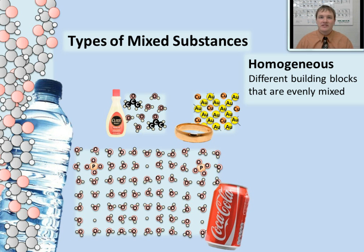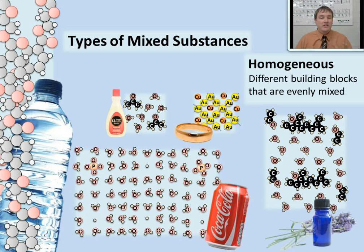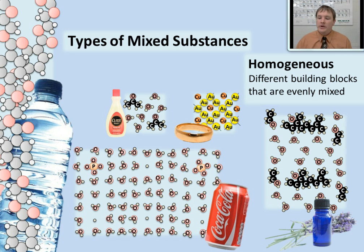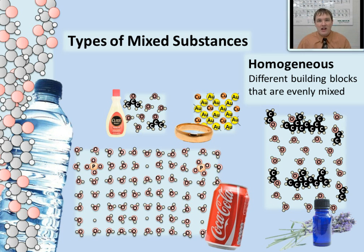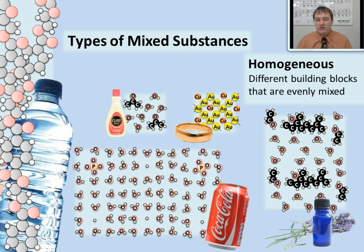Here we have lavender extract, which contains alcohol molecules, water molecules, and linalool — a molecule found in lavender that contains a lot of carbon. Notice the pattern: alcohol molecule, linalool, alcohol, then a row of waters — alcohol, linalool, alcohol, row of waters. Because you see that repeating pattern, you know there's an even mixture here. There's no crystal lattice in the background, which makes this a homogeneous mixture or solution. It has different building blocks — water, linalool, and alcohol — but they are mixed together evenly.